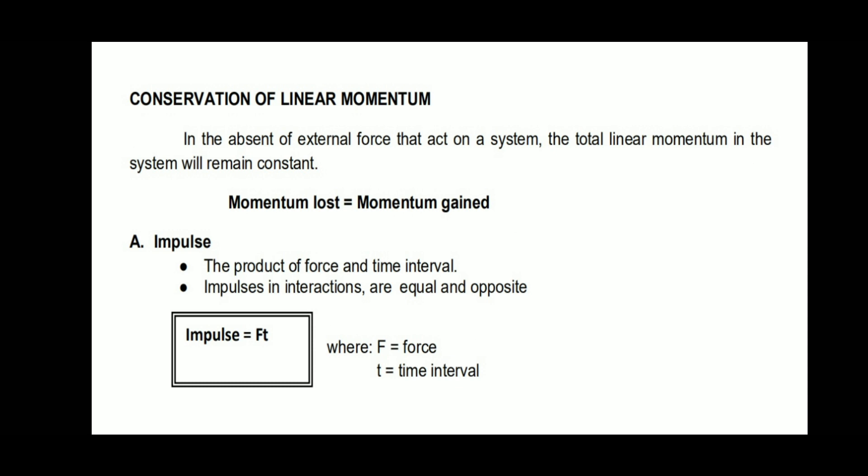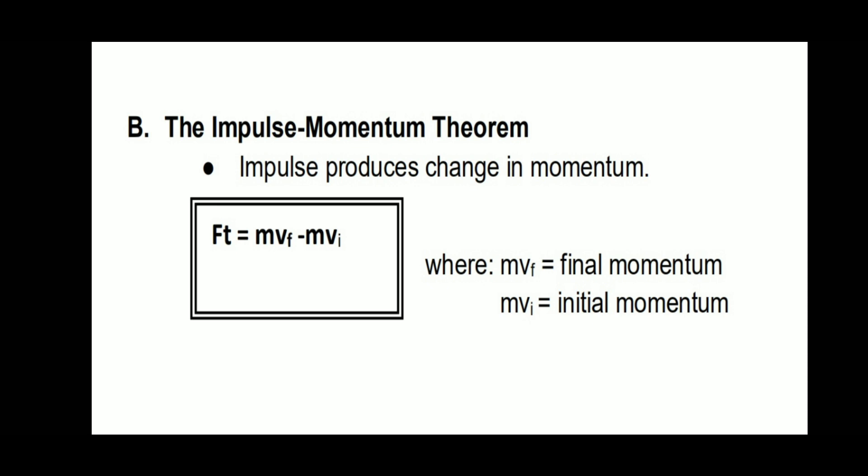Impulse is the product of force and time interval: impulse equals F times t. Next is the impulse-momentum theorem: impulse produces change in momentum. Force times time equals m times v sub f minus m times v sub i, where m times v sub f is the final momentum and m times v sub i is the initial momentum.